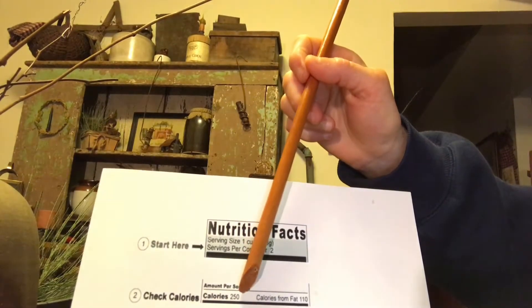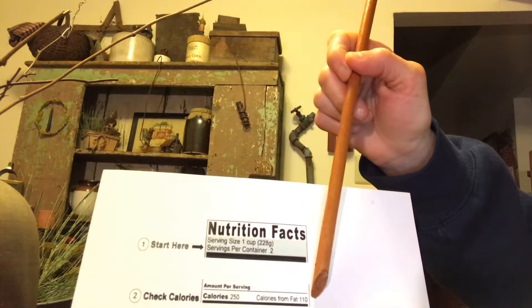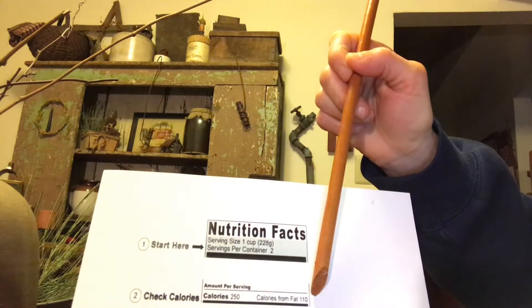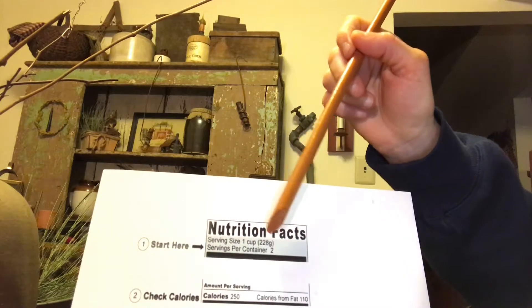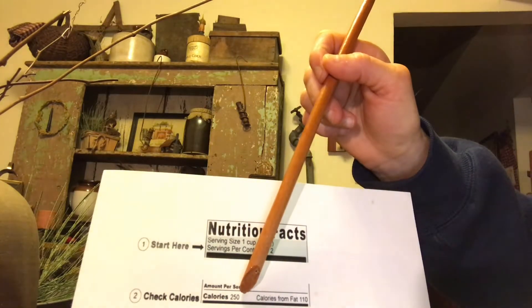The calories listed for one serving is 250. And the calories from fat is right next to that, which is 110. However, if you ate the whole box and you ate two servings, that turns into 500 calories.